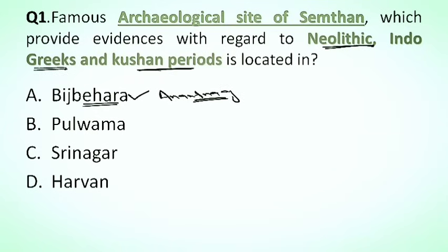In Kashmir, after the Mauryas, Kashmir came under the rule of the Indo-Greeks. And after the Indo-Greeks, Kashmir came under the rule of the Kushanas.